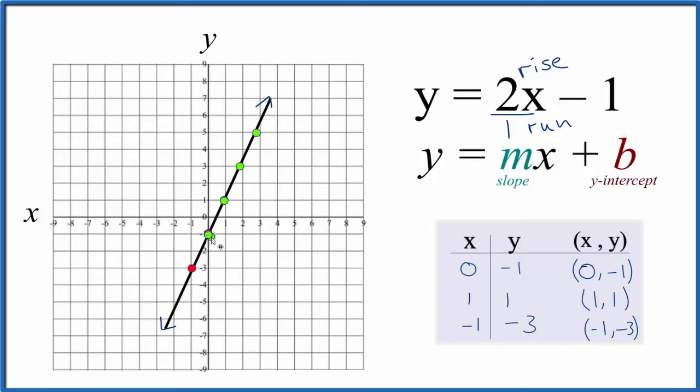Likewise, we could go the opposite direction. We could go down 2, 1, 2, and then over 1 in the opposite direction. And these points also would fall on our line.